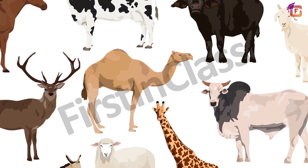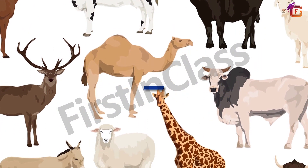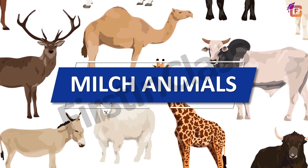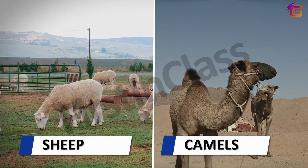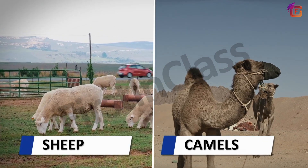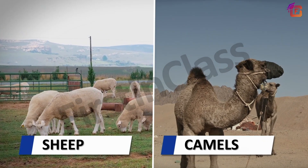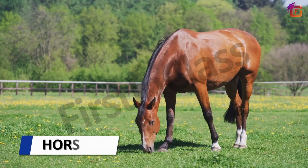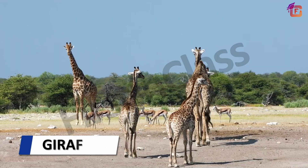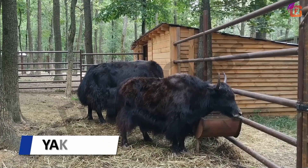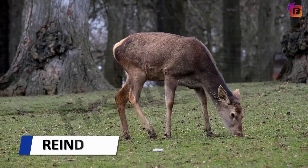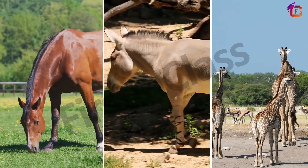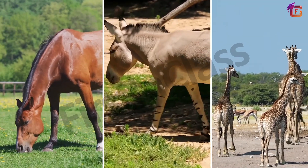Now let's talk about other examples of milch animals. Sheep and camels also provide us milk. People consume the milk of horses, donkeys, giraffes, yaks and reindeer as well in different regions of the world.